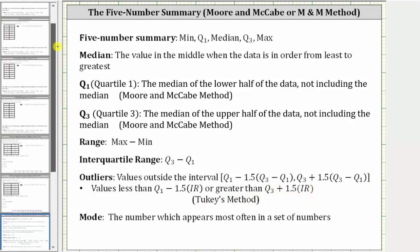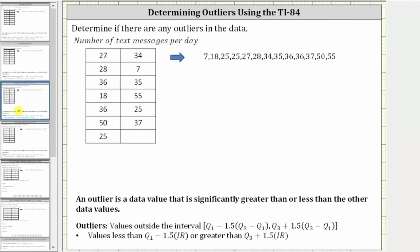So going back to our example, while it's not required, I do think it's helpful to order the data from least to greatest, as I have shown here. So if we have any outliers, they're going to be values that are really large or really small compared to the rest of the data values. So let's go to the calculator and enter the data.